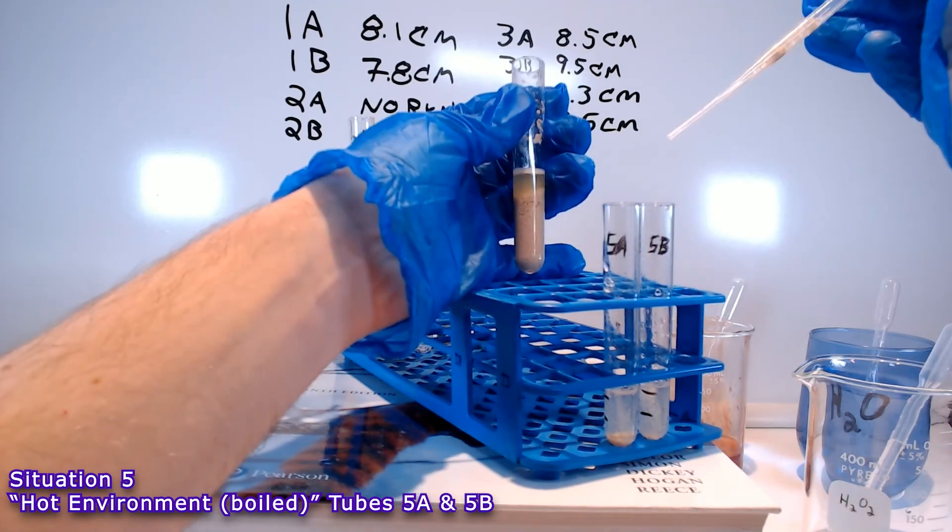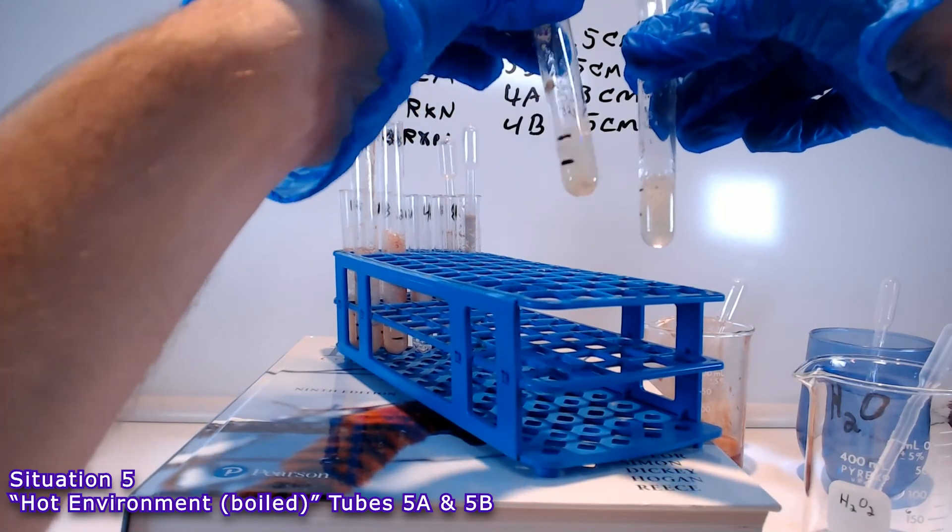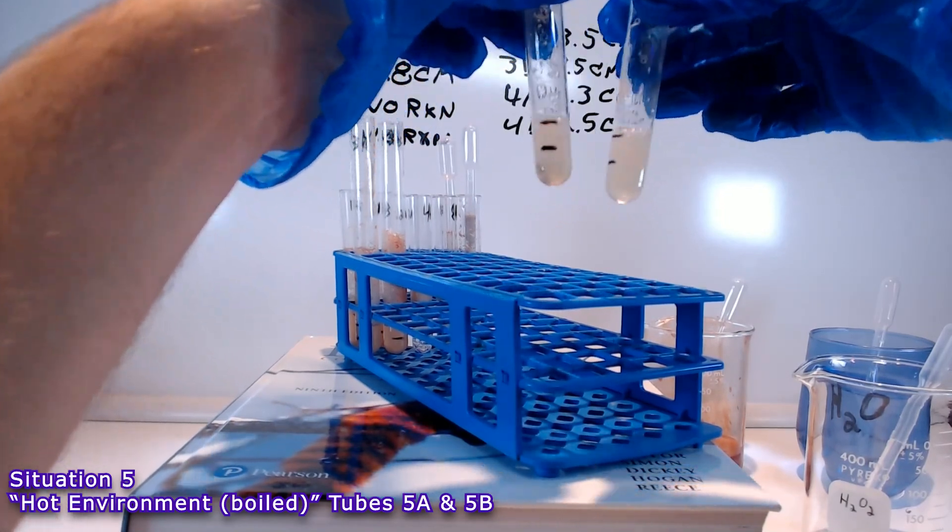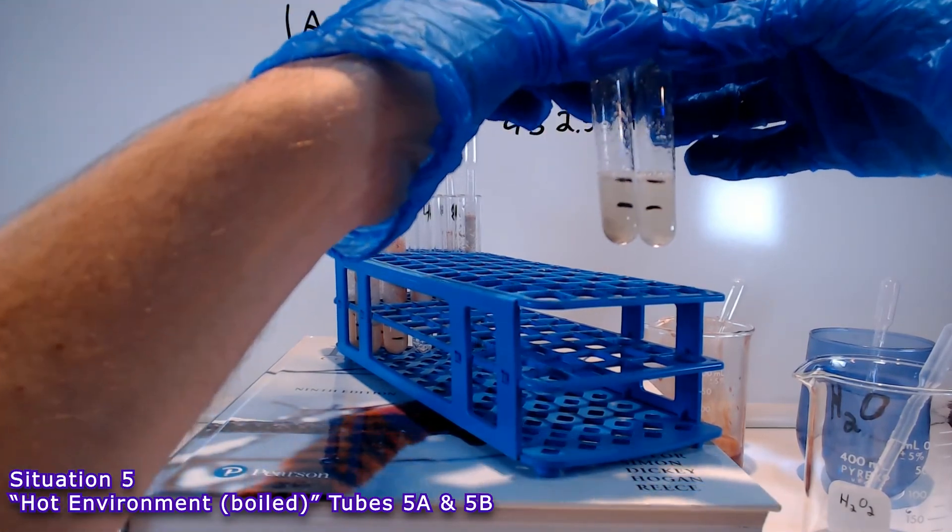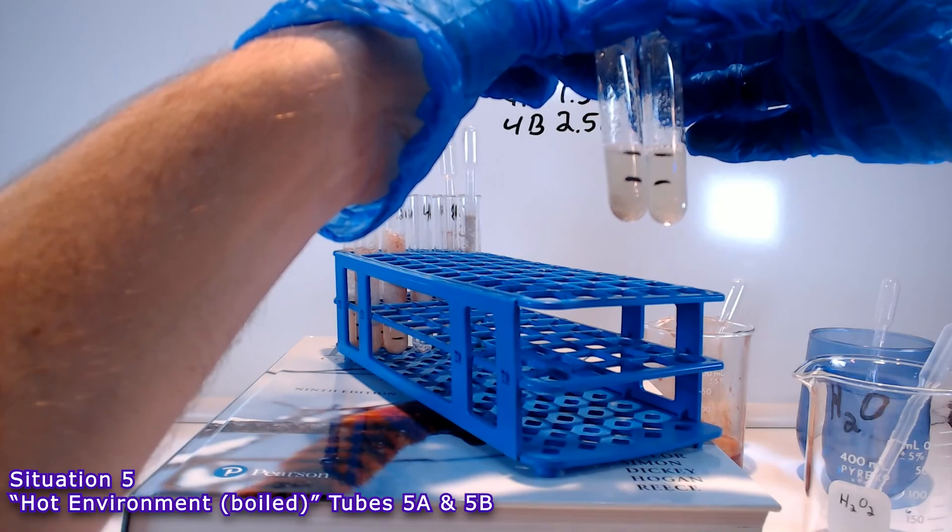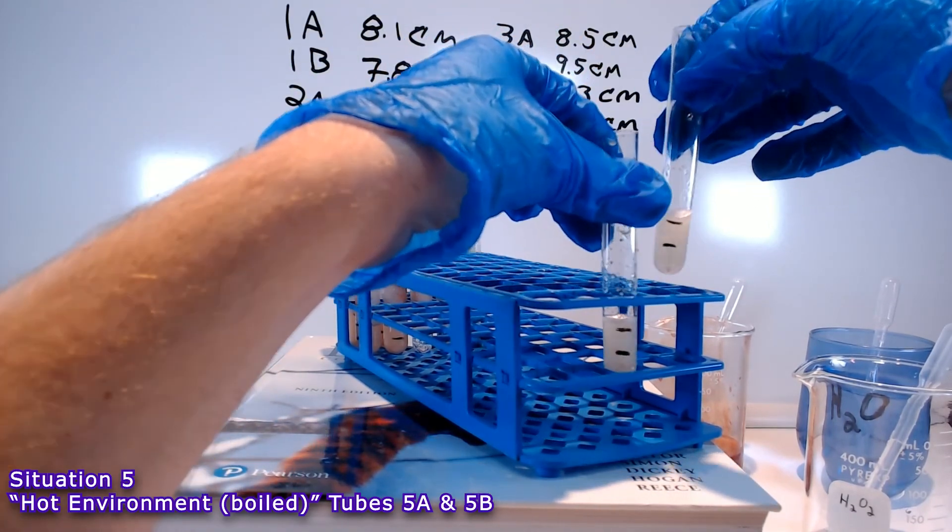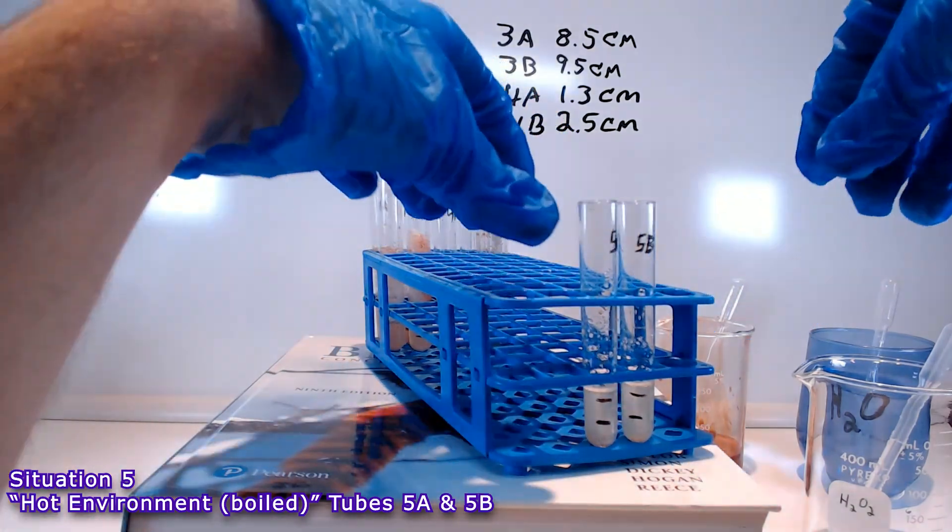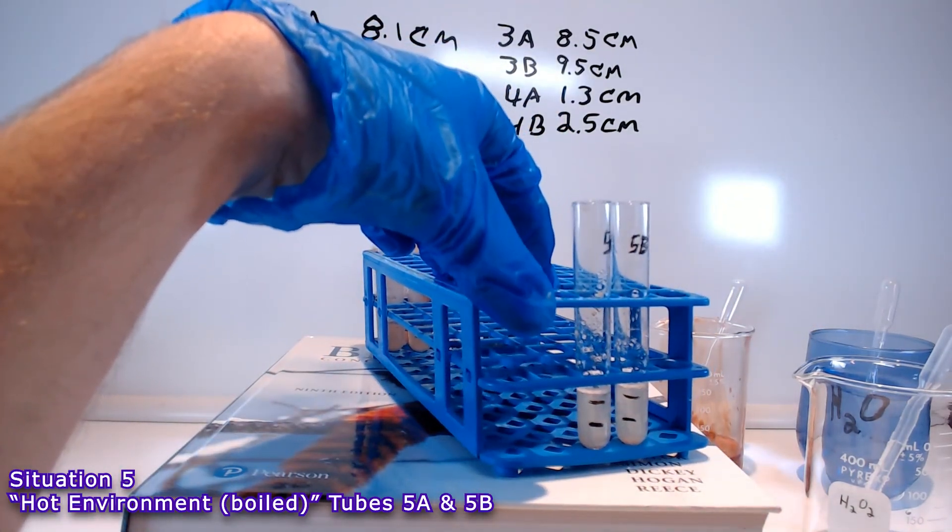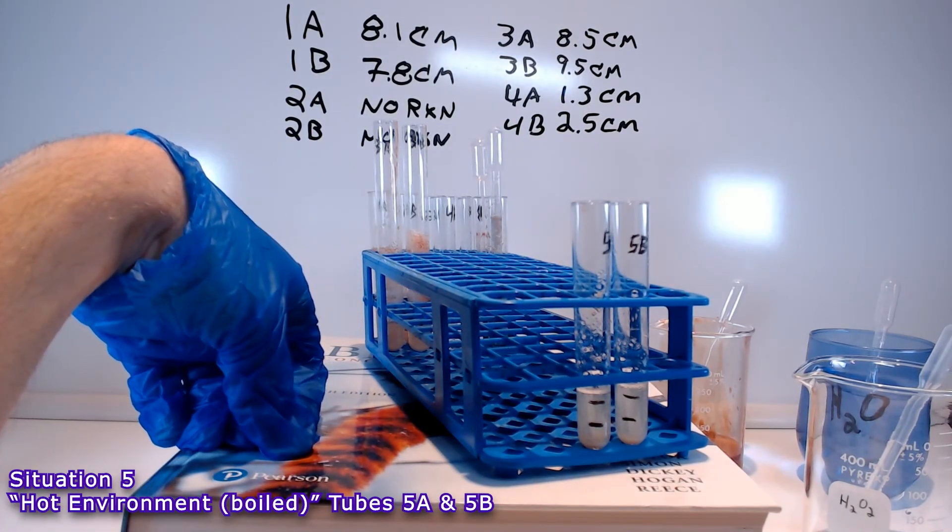Agitate the mix to make sure that it's in there. So, we have the catalase enzyme inside. We have hydrogen peroxide inside. But nothing's happening. After about 5 minutes, I call it. Tubes 5A and 5B. No reaction.